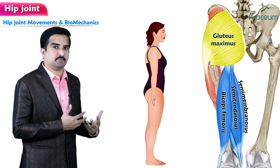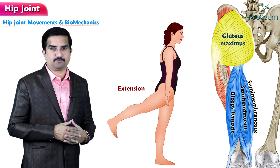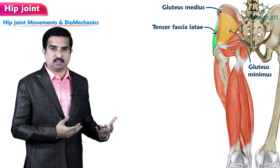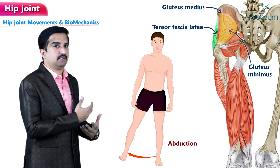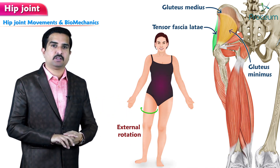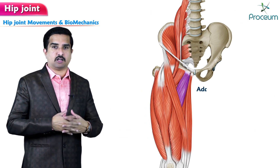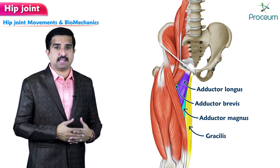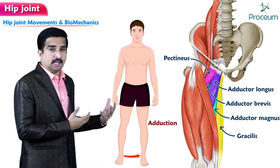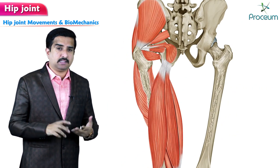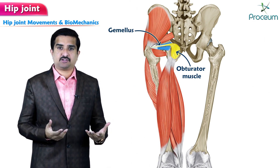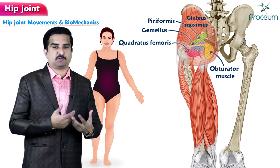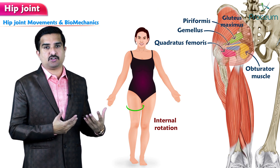The gluteus medius, gluteus minimus, and tensor fasciae latae allow for abduction and external rotation of the hip. The adductors — adductor longus, adductor brevis, and adductor magnus — along with gracilis and pectineus, allow for adduction of the hip joint. Muscles like the obturator muscles, gemellus, quadratus femoris, gluteus maximus, and piriformis are responsible for internal rotation of the hip joint.